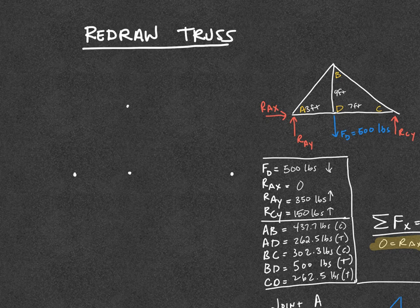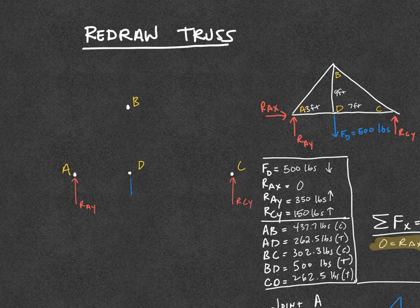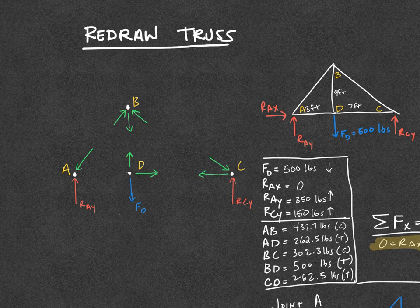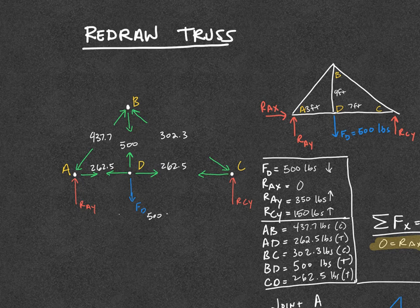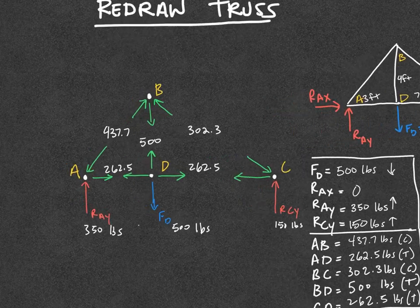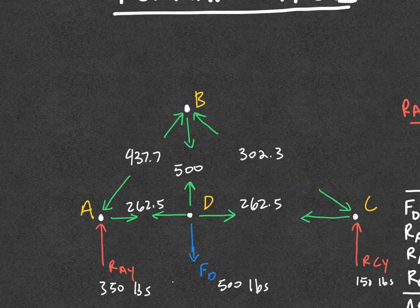The last step is to redraw the truss. I mark all my joints, label them with the appropriate letters, then draw my external forces in the directions I found, labeling them with their force values. Then I draw the internal forces for each member: when I have tension I draw away from the joint, and when I have compression I draw towards the joint. I fill in all values for each member in pounds. This final diagram is a summary of everything solved — tension, compression, direction — and that is my completed truss force diagram.